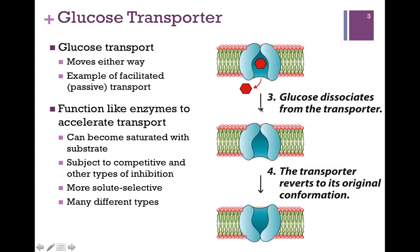Glucose releases from the transporter, and now we've effectively transported glucose from outside to inside the cell. Over a short period of time, that transporter will reset itself back to its original conformation. So it can rock either way — it can move substances from outside to inside or inside to outside, depending on the conformation. And again, the binding of the solute triggers that conformational change.